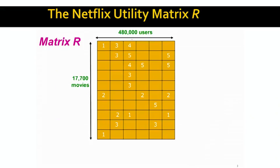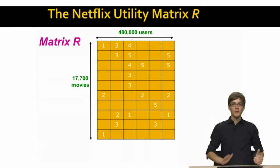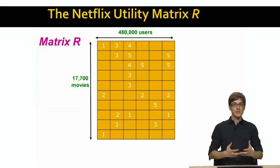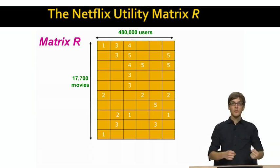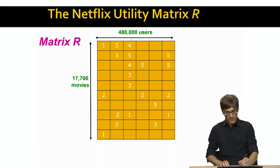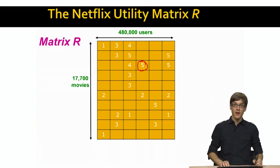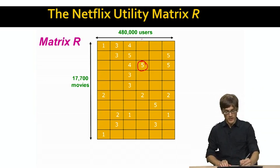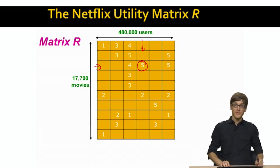The way we can think of our ratings data is in terms of the utility matrix R. This matrix is composed such that rows correspond to movies and columns correspond to users. Most of the matrix is empty, in the sense that most users haven't seen most of the movies. But whenever a user sees a movie and rates it, that represents an entry in this matrix. For example, an entry of five in the matrix means that the user in the fourth column liked the third movie a lot and rated it five stars.